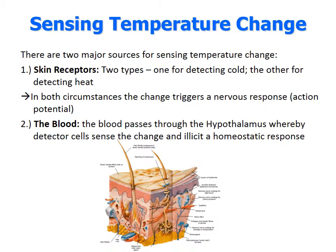For sensing temperature changes, there are two major sources: skin and blood. The skin detects both heat and cold and triggers a nervous system action potential response. As the blood passes through the hypothalamus, changes in blood temperature are detected. If too hot or too cold, it triggers a homeostasis response — either the skin sends a nerve response, or the blood informs the hypothalamus, which then produces a response.